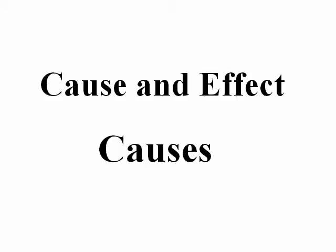When we look at causes, we examine events that precede a certain outcome. For example, what caused the outbreak of World War 1? Causes may be singular, where there is only one reason why something has taken place. Usually, however, there are several reasons or causes as to why something has happened.